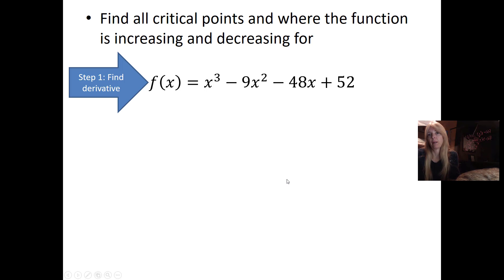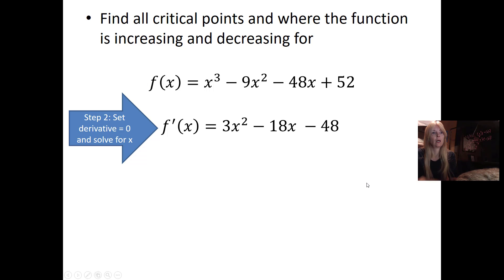First step, find the derivative. So I find the derivative, bring the three down, 3x squared, bring the two down. You're good at this, it's power rule, no problem. Set the derivative equal to zero because the critical points are where the derivative equals zero.